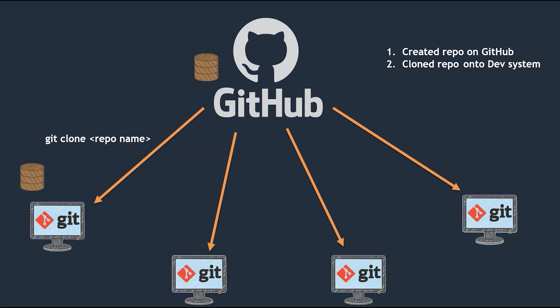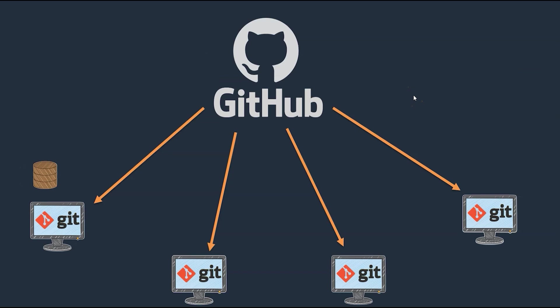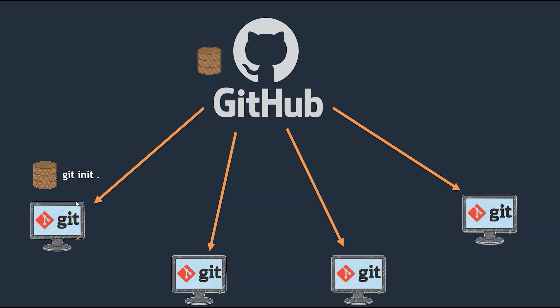Now let's think in the opposite direction. Before creating a repository on my GitHub account, assume that I have created a repository on my local system. What is the command we use? That is git init, right? If you remember, we created a first repository by using the git init command. So if we create a repository with git init, how can we update this code with the GitHub account? That is what we are going to see.